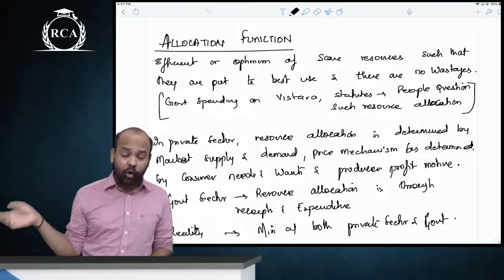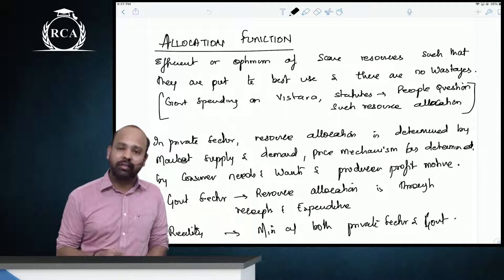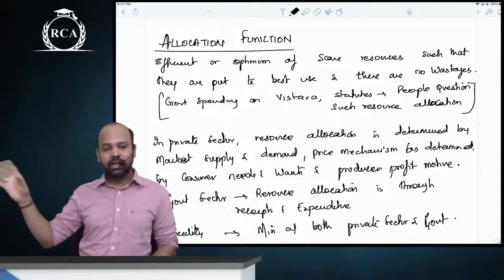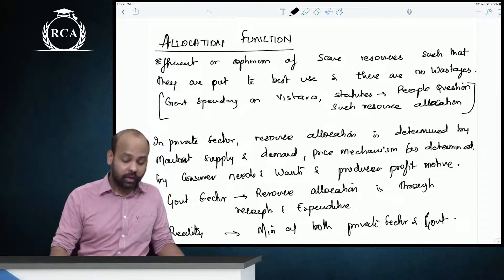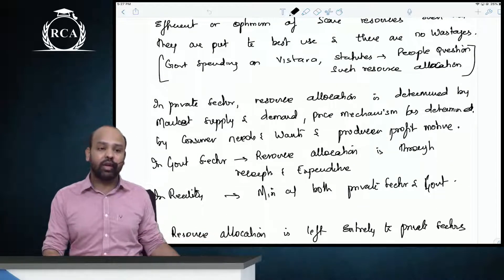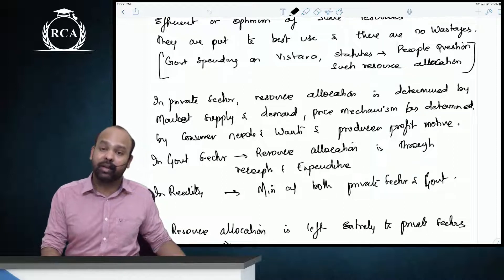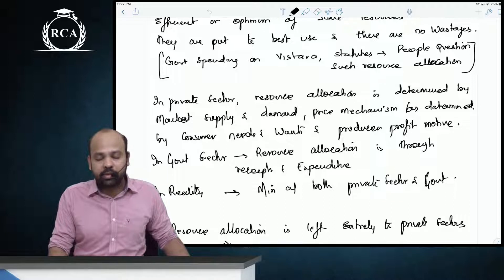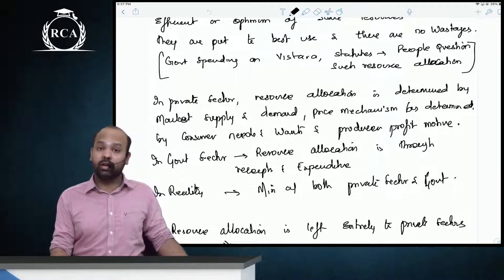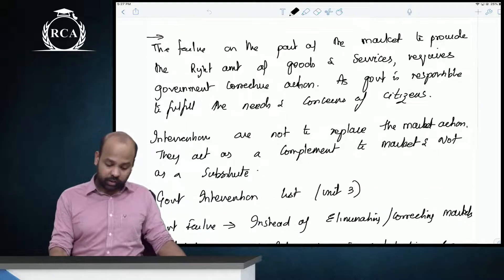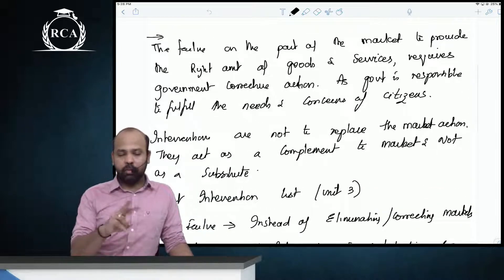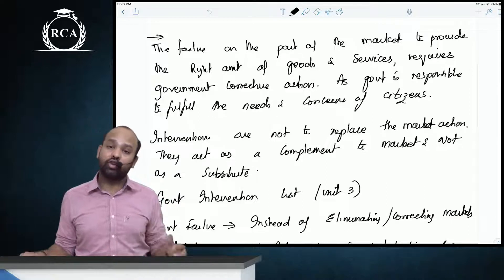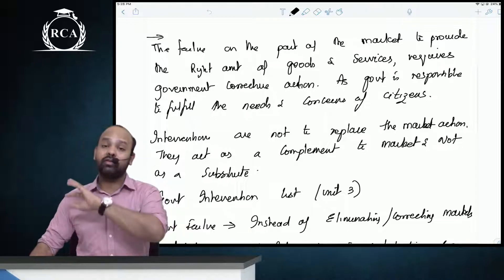Government corrective actions — through progressive rates of taxation, incentives, or reservation systems — are covered in Unit 3. In the private sector, resource allocation is mainly determined by the demand, supply, and price mechanism driven by consumer needs and producers' profit motives. In the government sector, it is through government revenues and expenditure. Government intervention is not a replacement of market action; it is only complementing, not substituting, market action.